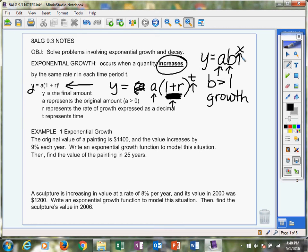Exponential growth problem: The original value of a painting is $1,400, so circle that amount. That's going to be our starting amount. And the value increases by 9% each year. This is going to be our r once we convert it into its decimal form, so r is going to end up being 0.09.